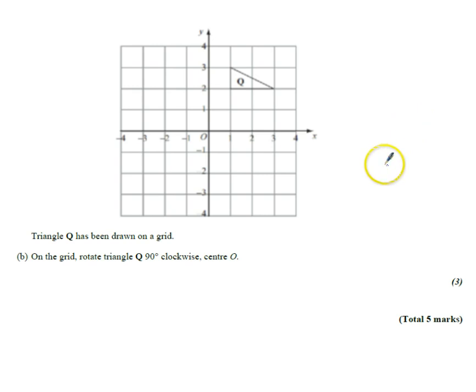Second part, it's got a grid this time, an xy axis and it's got a triangle Q and it's asked us to rotate the shape 90 degrees clockwise. The centre is zero, so it's got a centre of zero.